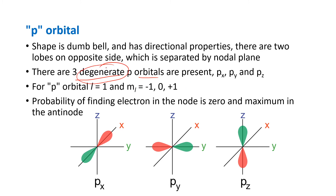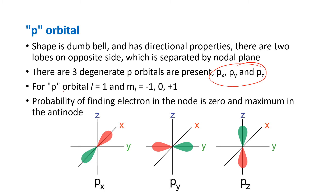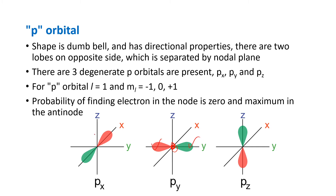The three degenerate p orbitals are px, py, and pz, and they have the same energy. For the p orbital, l is equal to 1 and ml has three values: minus one, zero, and plus one. The probability of finding electrons at the node is zero, but the maximum number of electrons can be found on opposite sides at the antinodes.